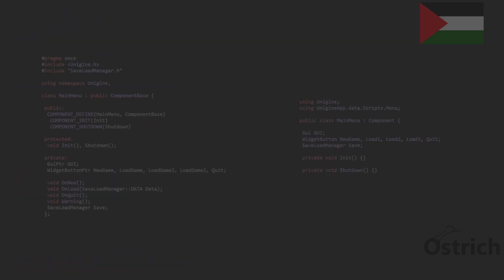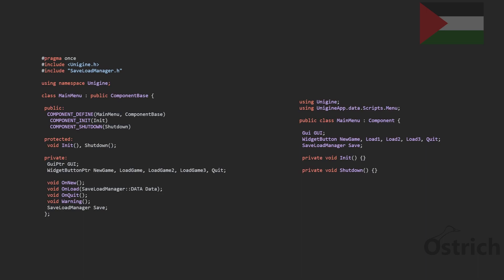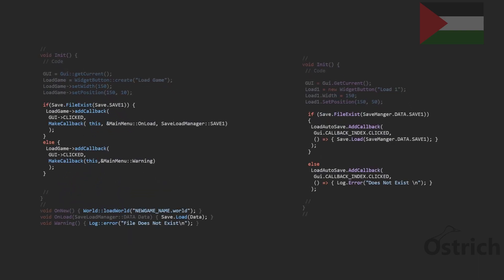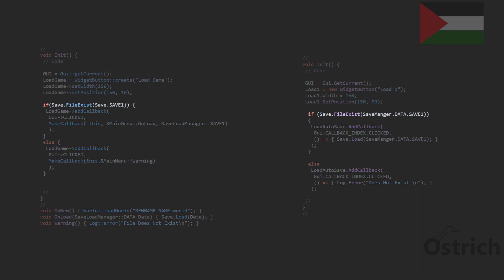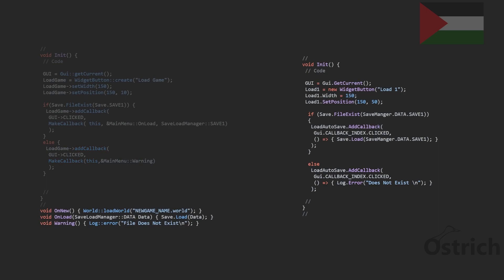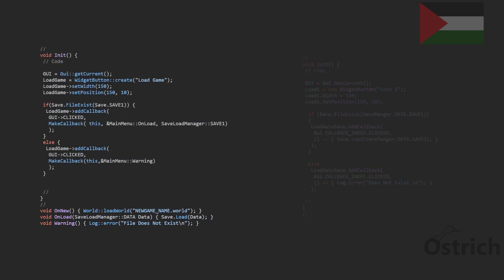For the main menu itself, the specific logic I want to highlight is the file-exists boolean used as logic inside our main flow. If the file does exist, we add the load option. If it does not exist, we add a simple warning error message. In C++, the functions are: new creates, load loads it, and warning is just a warning. C# handles this automatically.